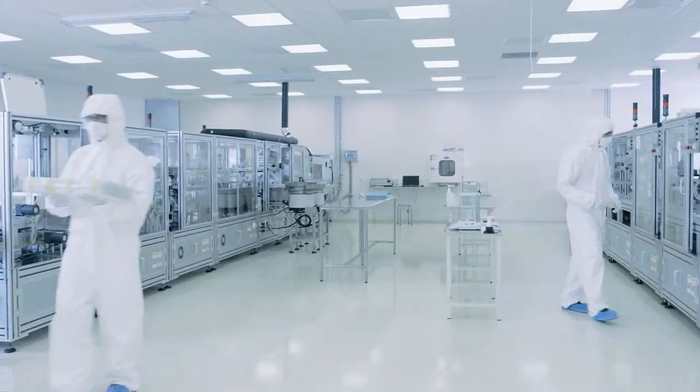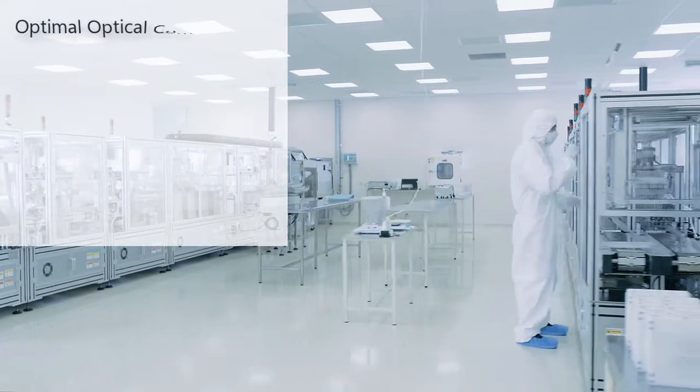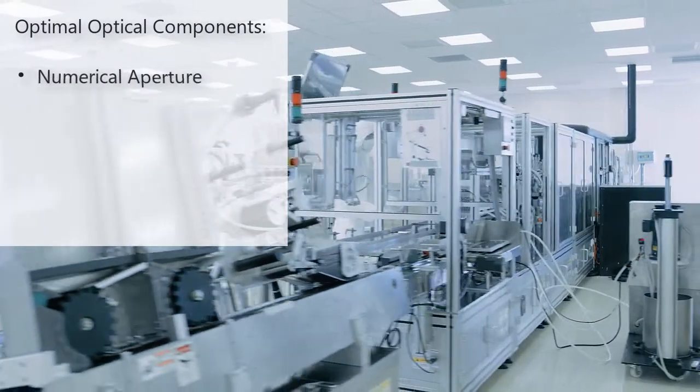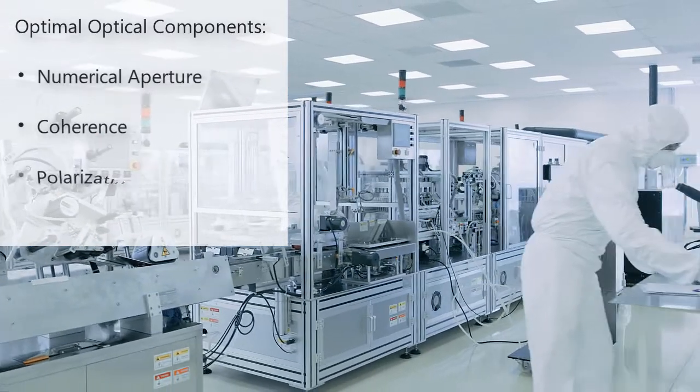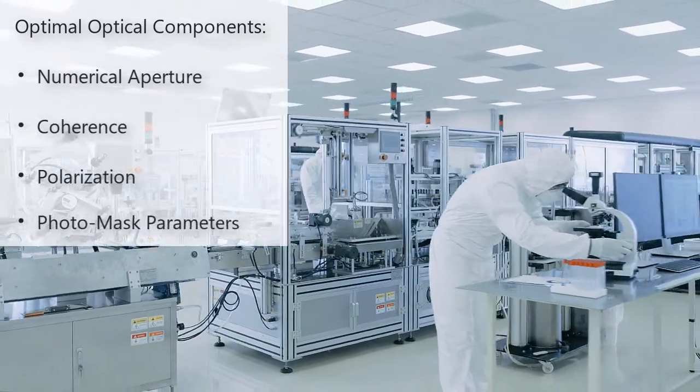Critical dimension uniformity can be improved by using optimal optical component settings, such as numerical aperture, coherence, polarization, or photomask parameters such as mask type and bias.